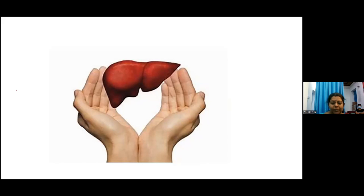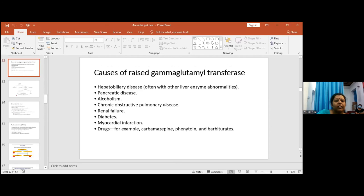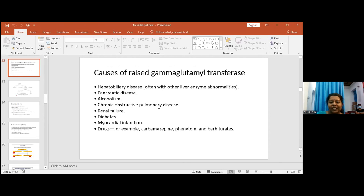In some pancreatic diseases and pancreatic malignancies, we can have elevated GGT even without bile duct obstruction. Other causes include alcoholism, chronic obstructive pulmonary disease, renal failure, diabetes, and myocardial infarction. Even in NASH, which is a hepatobiliary disease, GGT elevation can occur.